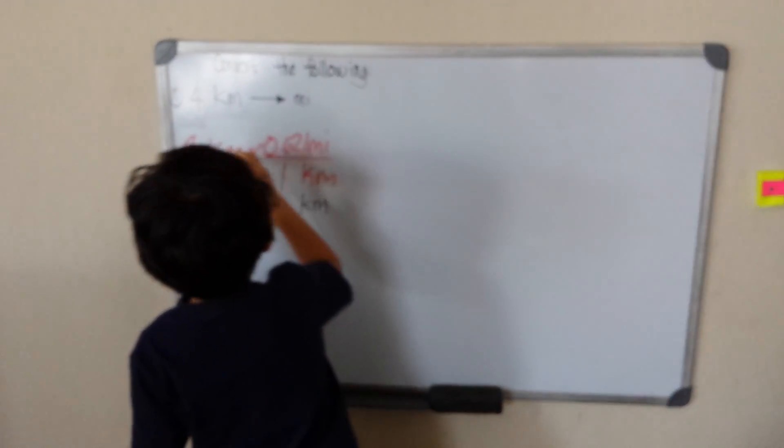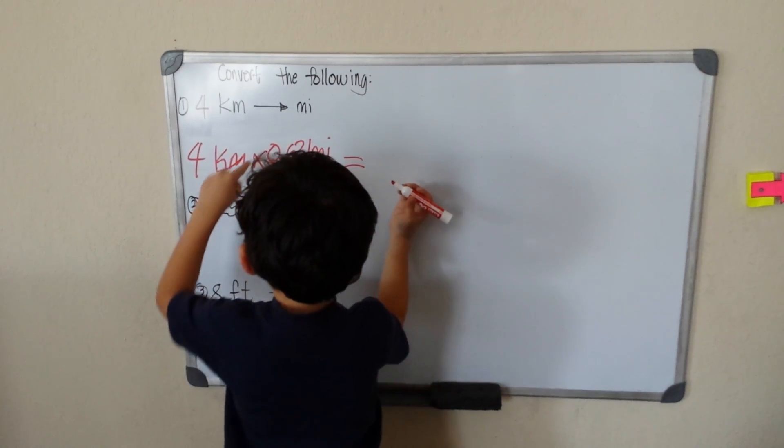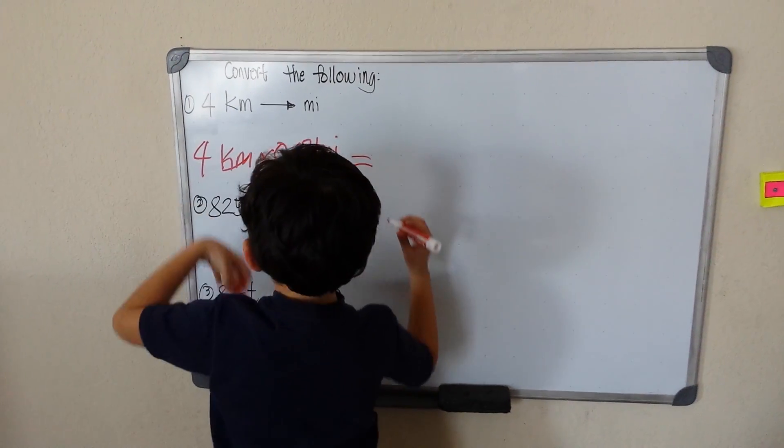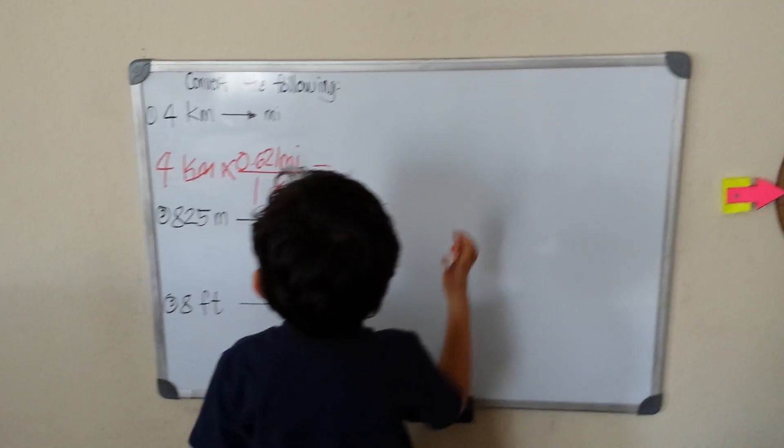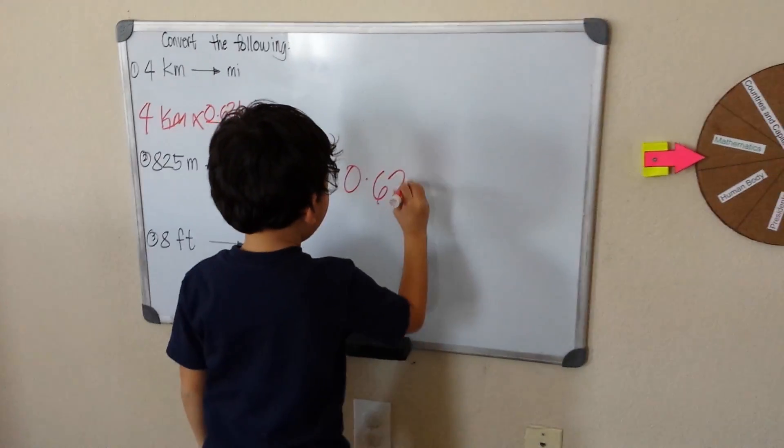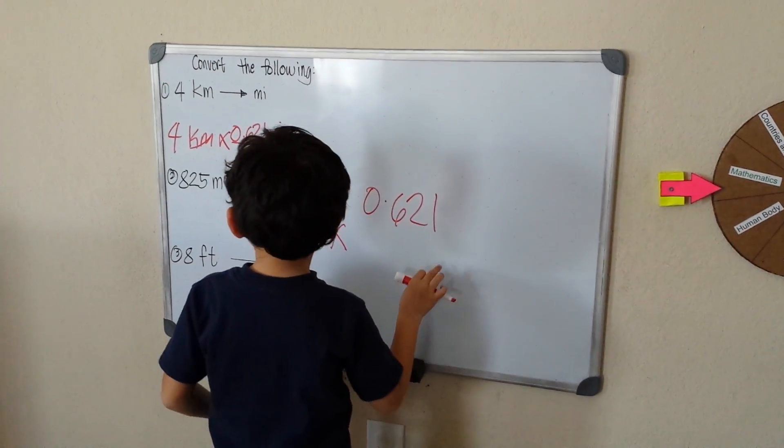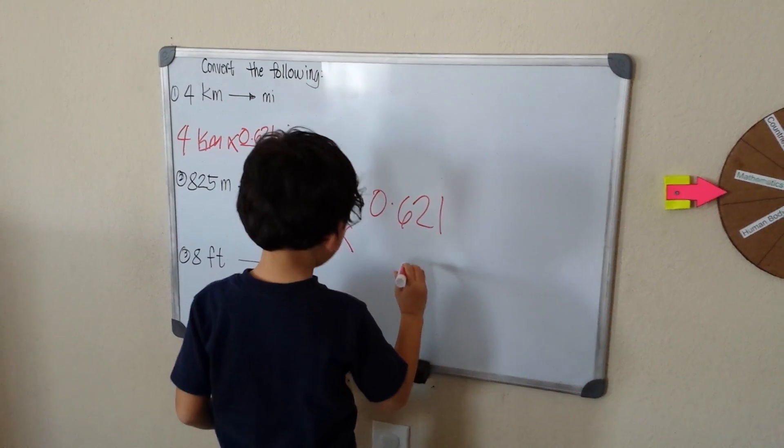So, cross. Then we can multiply these because these two are up. So, 0.621 times, what is that? 4.